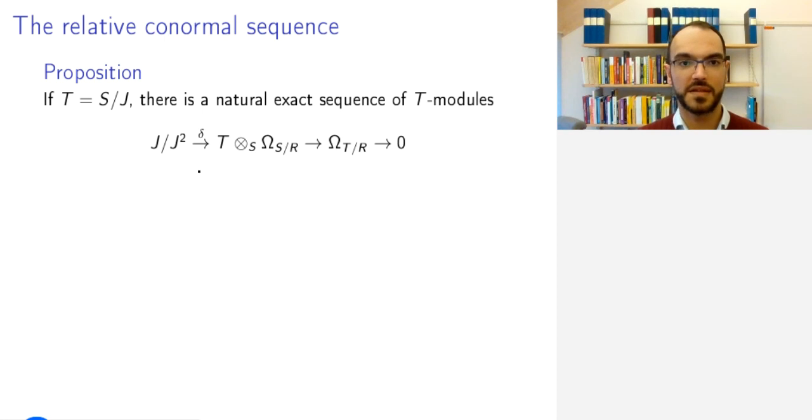Another sequence is the so-called relative conormal sequence. Now we take T to be S mod J, some ideal J, and then we have the following sequence.